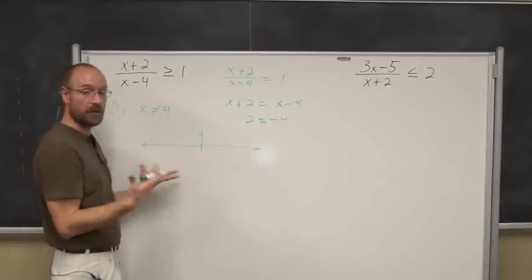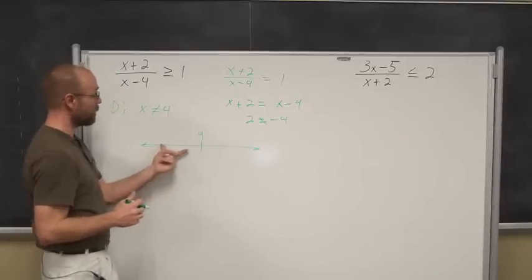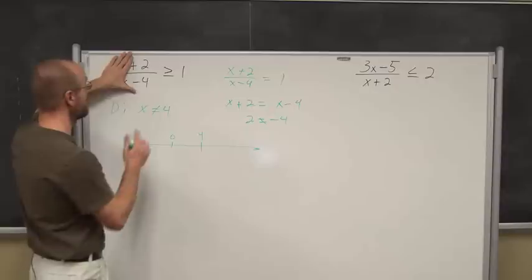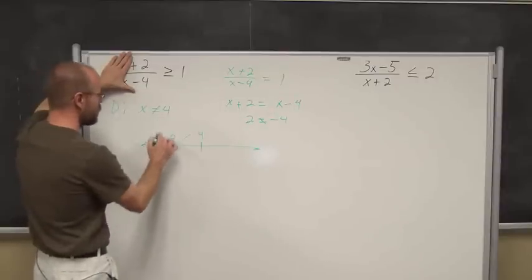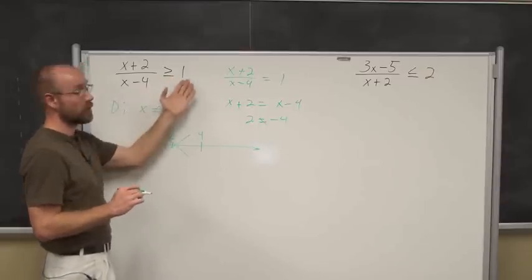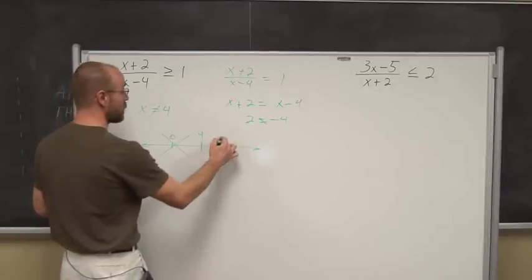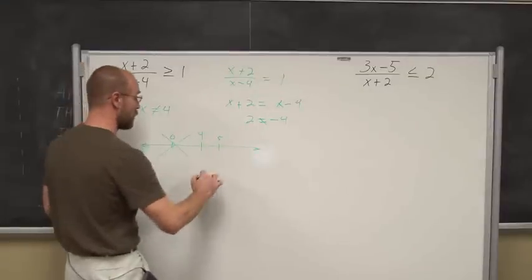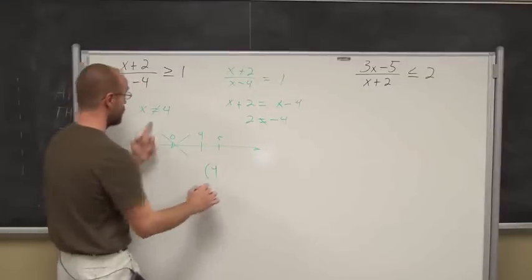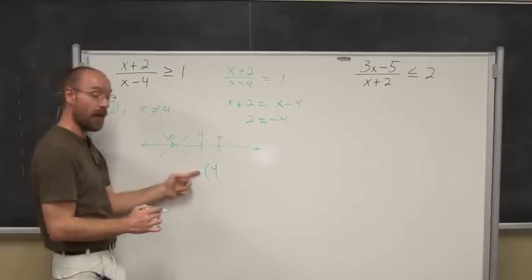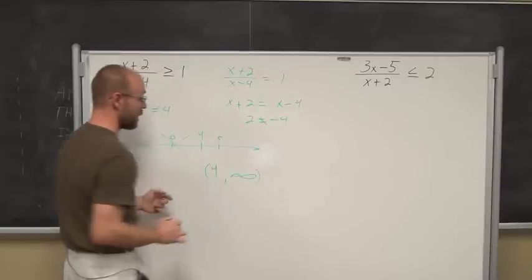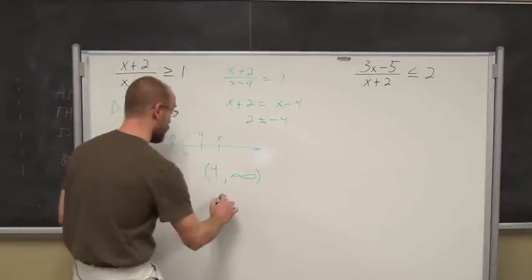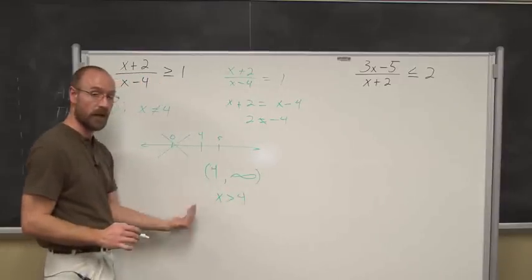This is not a true statement — 2 does not equal negative 4. That means there are no critical points that are going to change the sign, so x equals 4 is the only value that breaks up the number line. If I choose a value to the left, let's say 0: 2 over negative 4 is negative one-half, which is not greater than 1, so this interval does not work. If I choose a value to the right, say 5: 5 plus 2 is 7, 5 minus 4 is 1, so 7 over 1 is 7 — and 7 is in fact greater than or equal to 1, so this interval is true. Because x equals 4 is not in the domain, I cannot include it. So the solution is x greater than 4, or in set notation: x such that x is greater than 4.